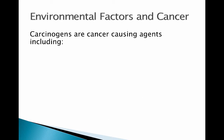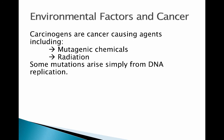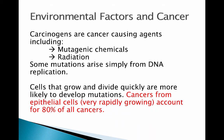Carcinogens are cancer-causing agents. There are mutagenic chemicals, and radiation can also cause DNA damage — like thymine dimers, as well as single and double strand breaks if the radiation has enough energy. Mutations can also arise simply from DNA replication because DNA polymerases aren't perfect.